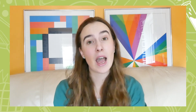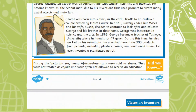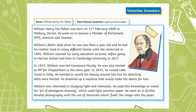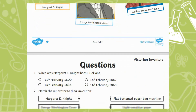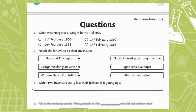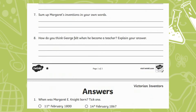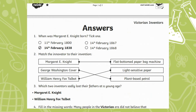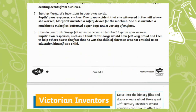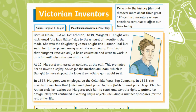If you want a reading task linked to Margaret Knight, our Upper Key Stage 2 19th century inventors reading comprehensions could be just for you. These differentiated sheets highlight three inventors, including Margaret Knight, and then have a variety of follow-up questions such as multiple choice, reasoning, and summarising.